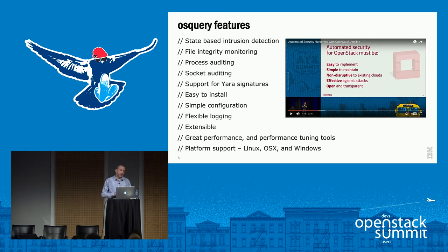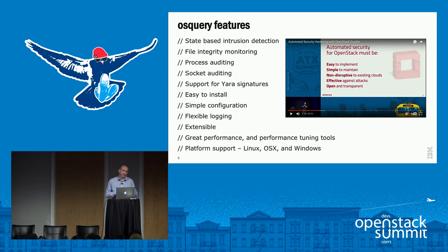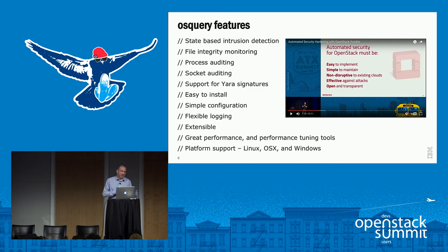In addition to that, it's batteries included — it has a lot of great features. You can do file integrity monitoring, process auditing, socket auditing. It has support for existing indicators of compromise in the Yara format, which is a format by VirusTotal. One of the best things about it is it's so easy to configure, install, and extend. A manager had called out at the Austin Summit some of the features that any security automation stack might have, and I feel OS Query goes a long way to meeting those requirements.